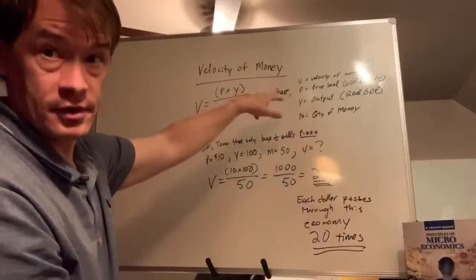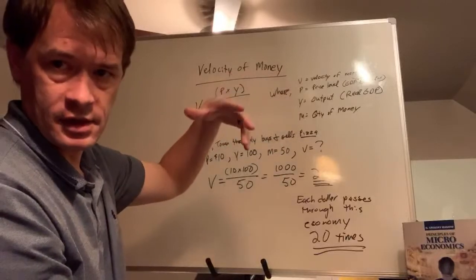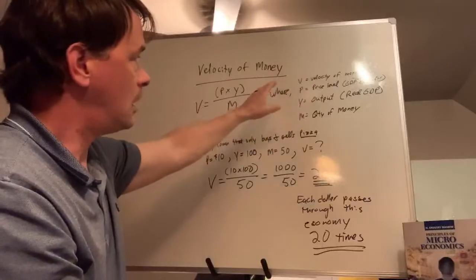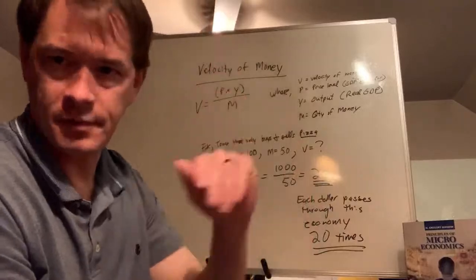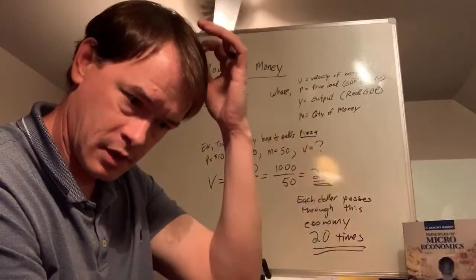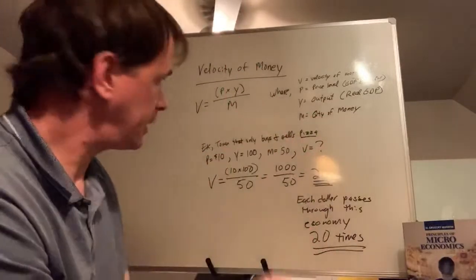Price level, by the way, is GDP deflator, so we've taken the inflation out of the price level. M is the quantity of money. That vertical line from the previous video is our money supply—how many dollars we have in the economy.